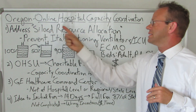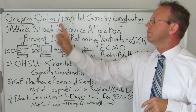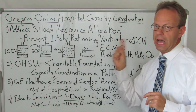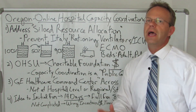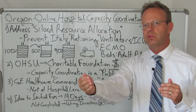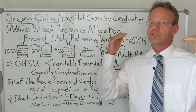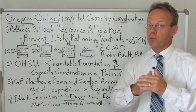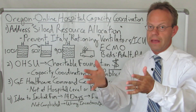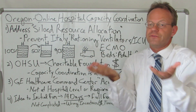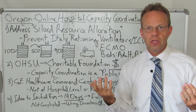Why did they do this? To address siloed resource allocation — a fancy term for, as it relates to coronavirus, preventing what happened in Italy with rationing of ventilators and ICU beds. If one hospital was totally full, all their ICU beds and ventilators were full, and somebody new came in with respiratory failure needing a ventilator because of coronavirus, they might die. But close-by hospitals potentially had beds and ventilators available, so coordinating hospital resources is a matter of life and death.